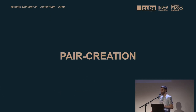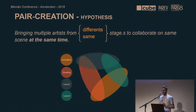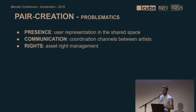In my opinion, pair creation consists of bringing multiple artists to work on the same piece at the same time asynchronously. More precisely in animation, pair creation consists of bringing multiple digital artists from different or same stages to collaborate on the same scene at the same time. But putting multiple users into the same shared space raises problematics: how they will see each other, how they will communicate to collaborate — because communication is the basis for solid and efficient collaboration — and finally, how to prevent conflict between users.